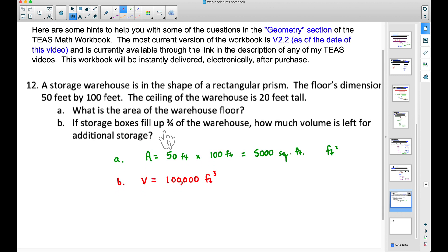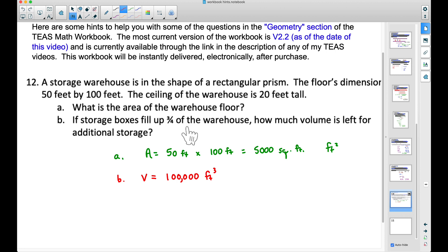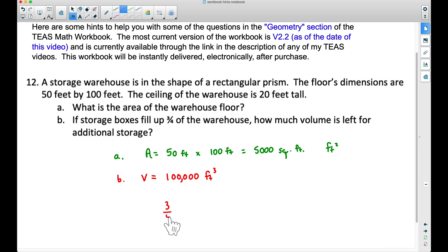Well, what do we know? Three-fourths of the warehouse is already full of storage boxes. Well, three-fourths of, of very often does mean multiply. So if we take three-fourths of the entire warehouse, the entire volume, that's going to be 100,000. Well, three-fourths of 100,000 is 75,000.